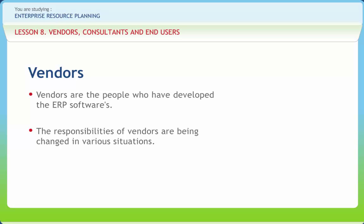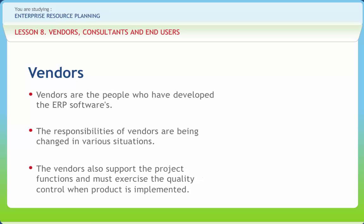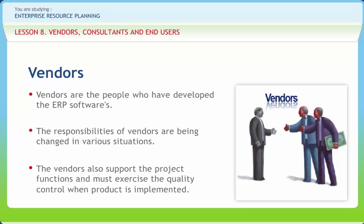The vendor should supply the product and its documentation as soon as the contract is signed. Another key responsibility of a vendor is as a trainer, to offer initial training for the company's key users. The vendors also support the project functions and must exercise quality control when the product is implemented. If the implementation fails, most of the blame will fall on the vendors.